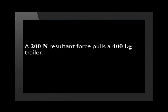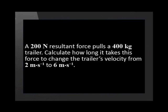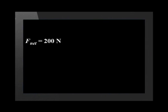A 200 newton resultant force pulls a 400 kilogram trailer. Calculate how long it will take this force to change the trailer's velocity from 2 meters per second to 6 meters per second. Now let's see what the question tells us.